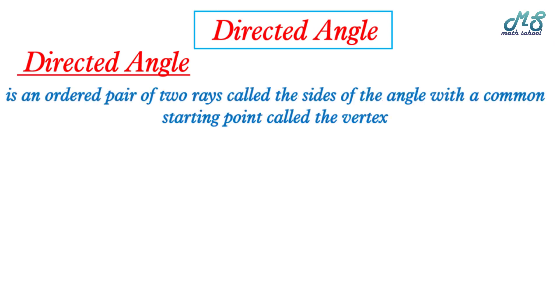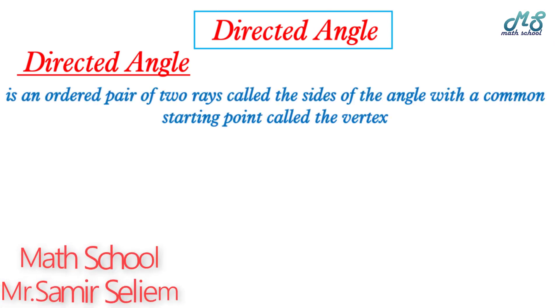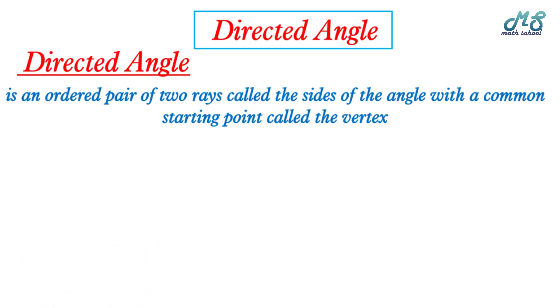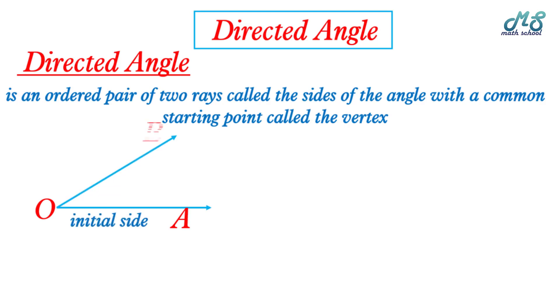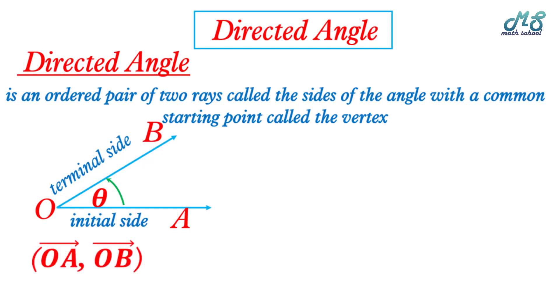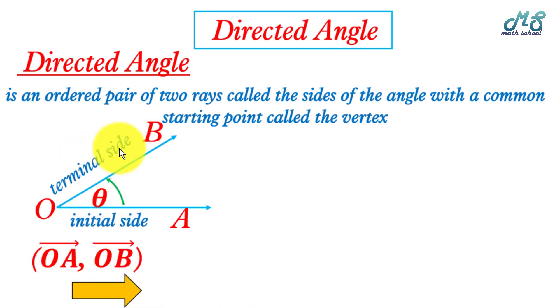A directed angle is an ordered pair of two rays called the two sides of the angle, with a common starting point which is the vertex. OA is called the initial side and OB is called the terminal side, forming an angle with measure theta. The direction goes from the initial side to the terminal side. The first coordinate is the initial side OA and the second is OB, the terminal side.